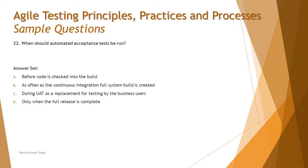Looking at the options: Option A says 'before code is checked into the build' — that's not the right point because the developer hasn't even checked the code in yet. After check-in, there will be build integration, stabilization, and regression checks to ensure stability before going to the business. So it's too early to conduct acceptance tests, and A can be ruled out straightforwardly.